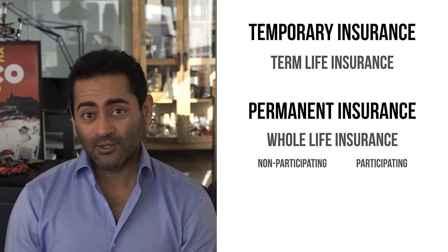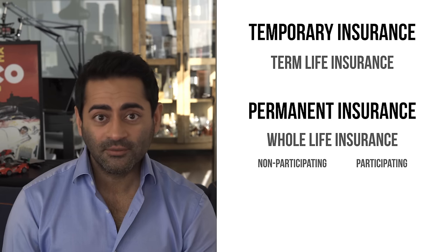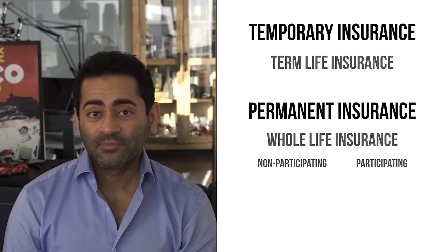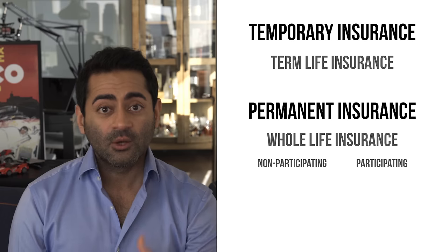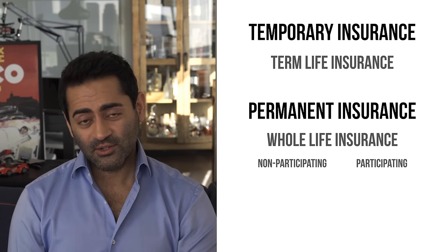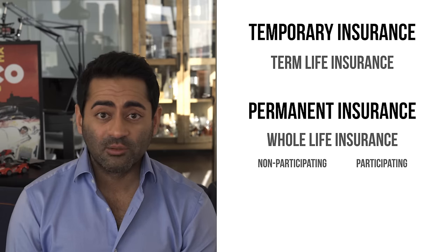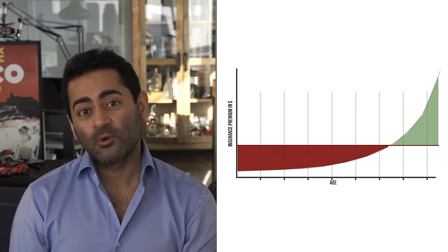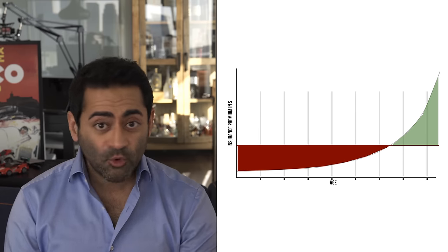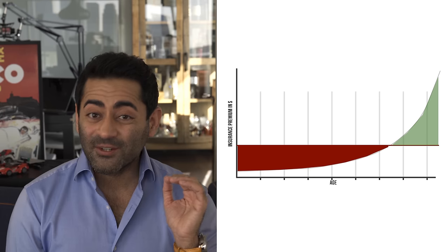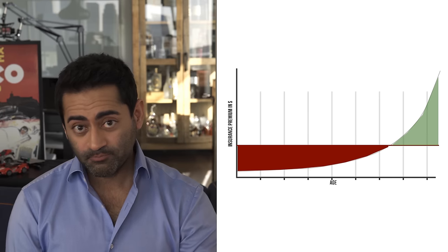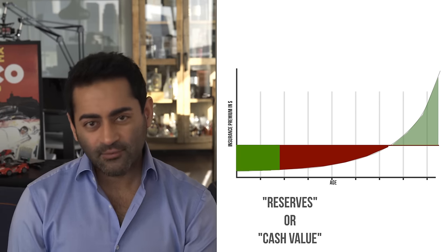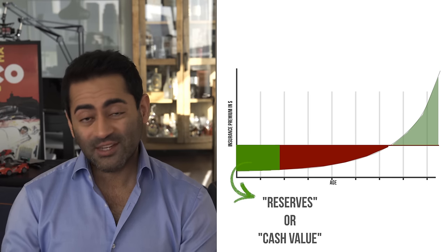If it's participating whole life or par whole life, we participate in the profits of the insurance company. If it's non-participating, we don't participate in the profits, but the initial premiums will be a little bit lower. These whole life policies are going to initially look way more expensive than term, but they're designed to be permanent. They take part of your premiums early on and invest them into pools called reserves or cash values.